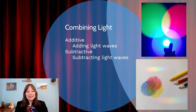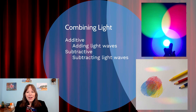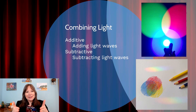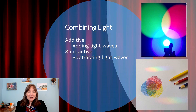Speaking of combining light, there are different theories depending on whether we're adding or removing light waves. The additive theory of light — I purchased three flashlights, each with a different color filter: green, red, and blue. We shone all three on a white wall, adding wavelengths of light. Green plus red equals yellow, green plus blue equals cyan, and blue plus red equals magenta. In the center of that Venn diagram, all three together produce close to white light, because we're adding the green, red, and blue wavelengths together.